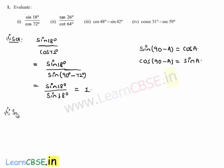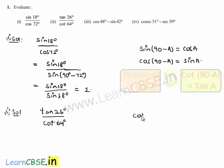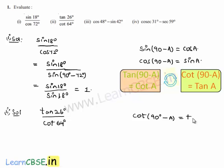Now moving on to the solution for the second bit. The given expression is tan 26° divided by cot 64°. Let us convert both numerator and denominator into a single trigonometric ratio — tan. We have cot(90° − a) = tan a and tan(90° − a) = cot a.